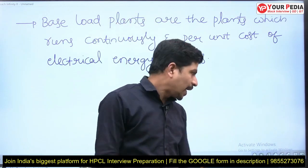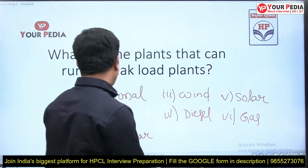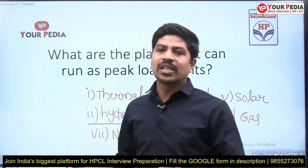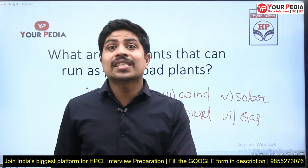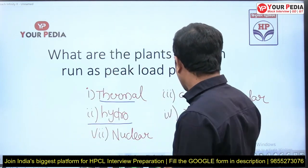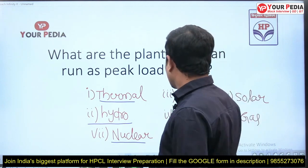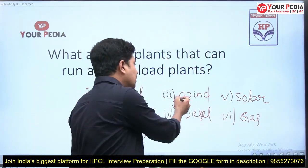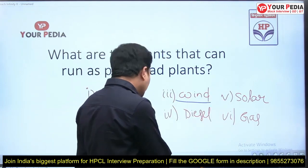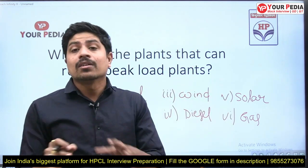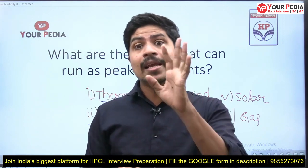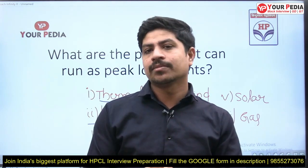If you consider hydro plants, the cost of fuel is essentially zero — water is used as input. Water hits the turbine, the turbine rotates, the generator rotates, and we get power. Thermal, hydro, and nuclear can be used as base load plants. Wind sometimes can be used as base load but is not reliable since wind keeps changing. A base load plant must provide continuous power supply at low cost.